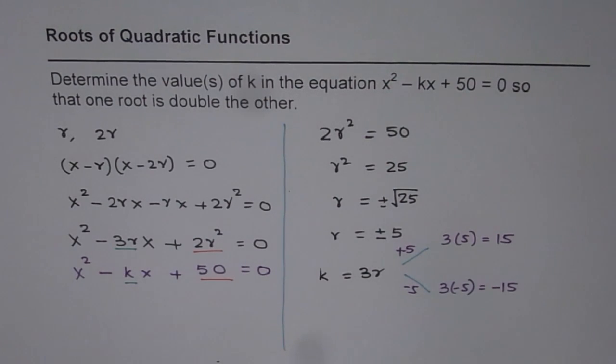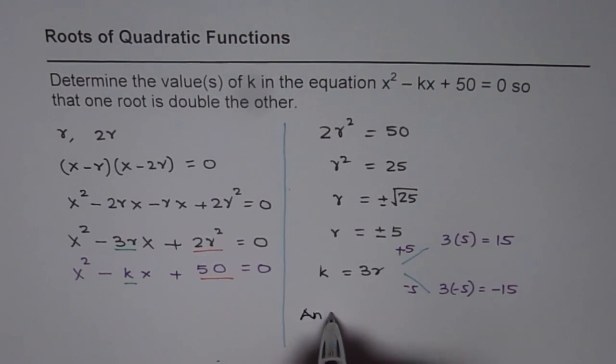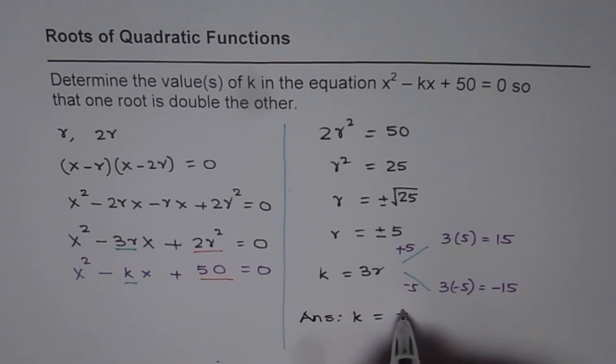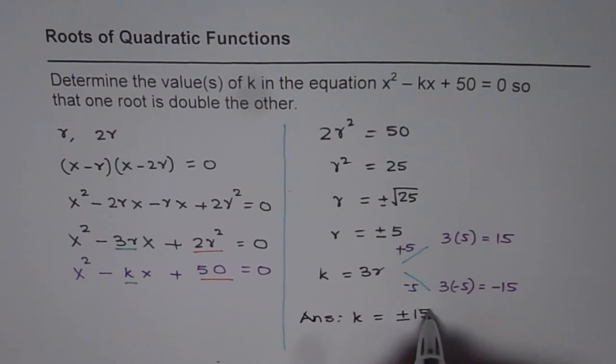So k has two possible values. That is how we can solve this question, and therefore, we can write down our answer that k = ± 15.